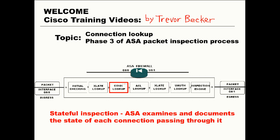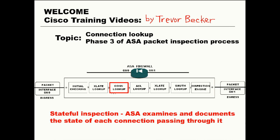The Cisco ASA keeps track of all of its current connections using a connection table. Once the connection table entry is created, a flow is then established for that source and destination connection. All return traffic will be inspected and will immediately be permitted through that existing flow in the connection table if all the parameters for that return traffic match the initial connection.